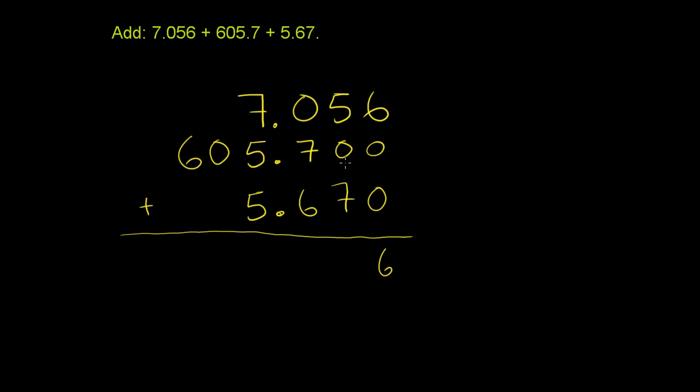And you keep going. 5 plus 0 plus 7 is 12. You write the 2 in the hundredths place and carry the 1. 1 plus 0 plus 7 is 8, plus 6 is 14.